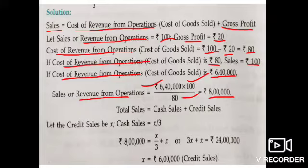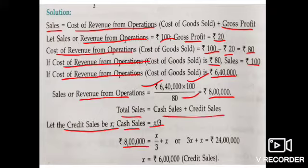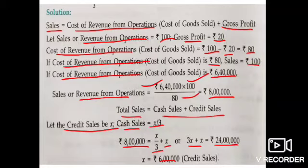Cash sale is 1/3 of credit sale. Let credit sale = x, so cash sale = x/3. Total sale = x/3 + x = 4x/3 = ₹8,00,000. Cross-multiplying: 4x = ₹24,00,000, so x = ₹6,00,000. Credit revenue from operation = ₹6,00,000.